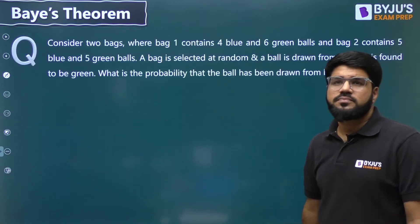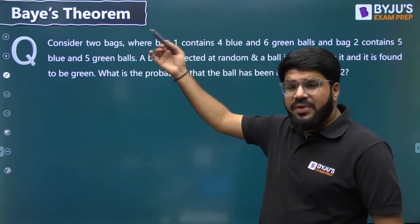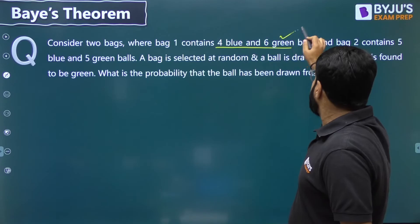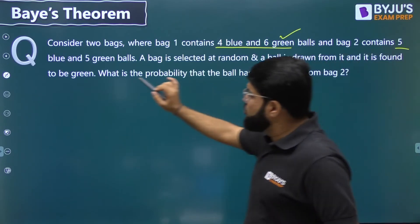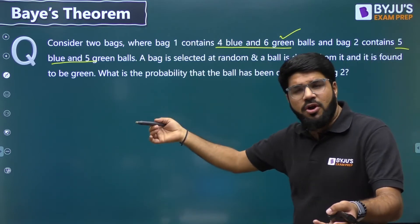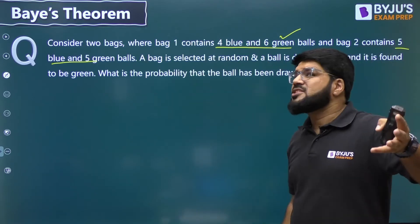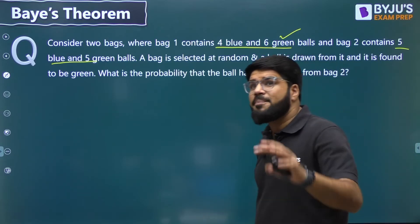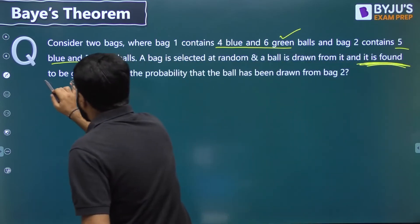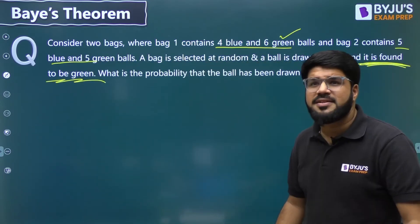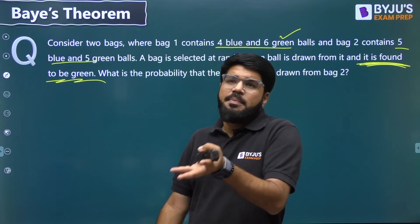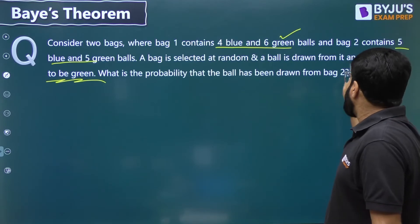Now let me present another version of this question. Same situation — two bags, bag one has four blue and six green, bag two has five blue and five green. A bag is selected at random and a ball is drawn. But now the twist: a ball is drawn and it is found to be green. It is told that it is green — what is the probability that it came from bag two? The green ball has already appeared; it may be from bag one or bag two. What is the probability it is from bag two?